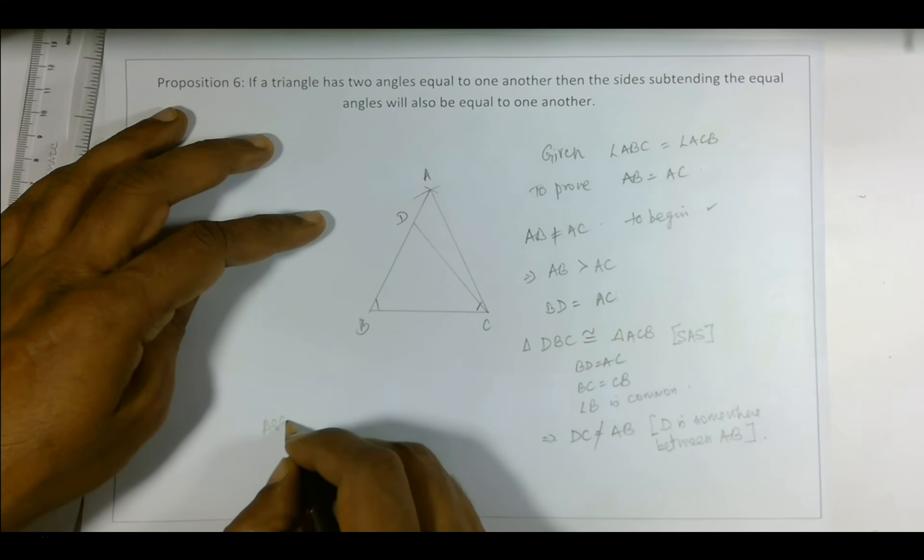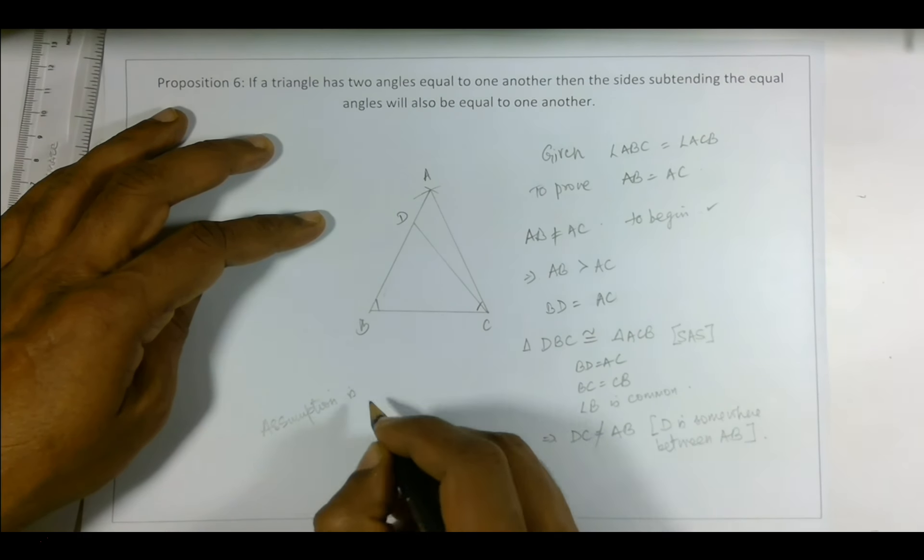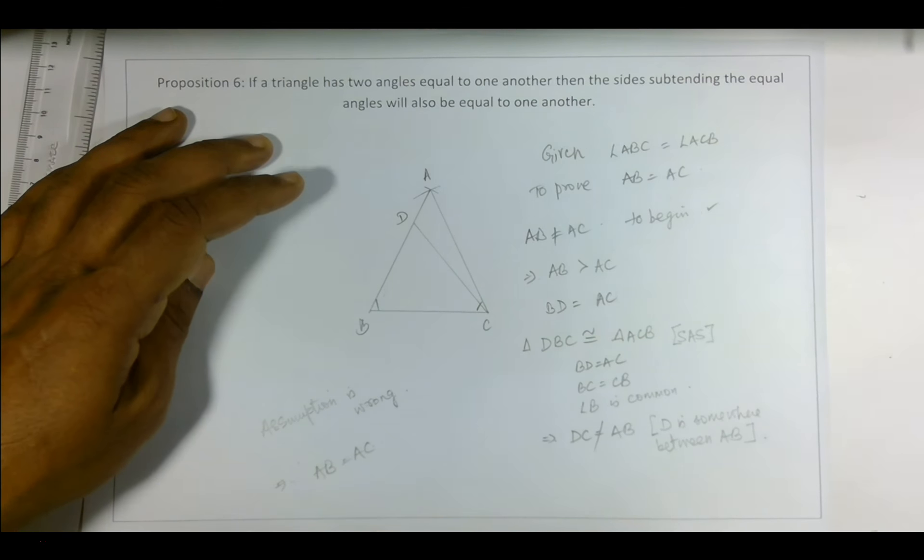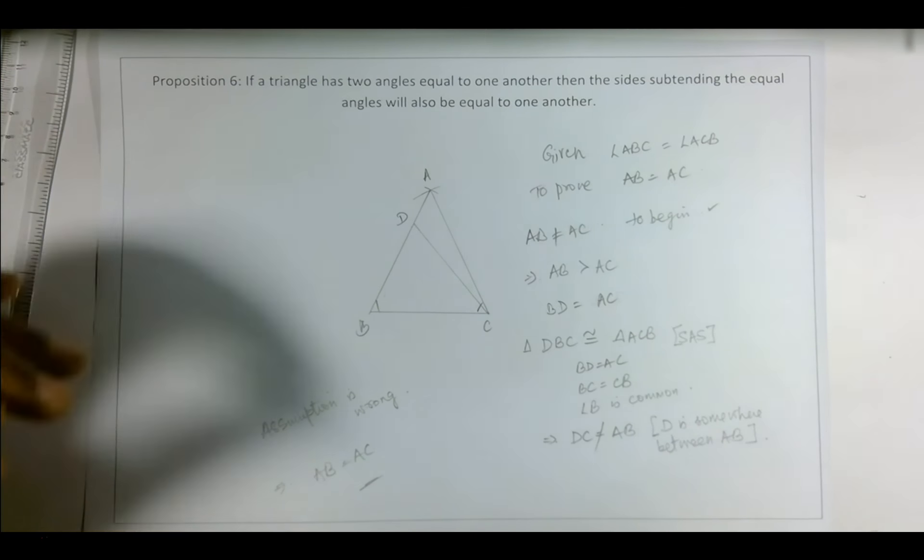So which means the assumption is wrong, which implies that AB is equal to AC. So that is what we had to prove. That is Proposition 6.